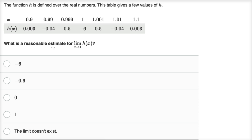With a table, we can estimate the limit. We won't know 100% for sure, but it's a good way to estimate a limit. These first three entries show what's happening as we approach x equals one from the left — from values less than x equals one.